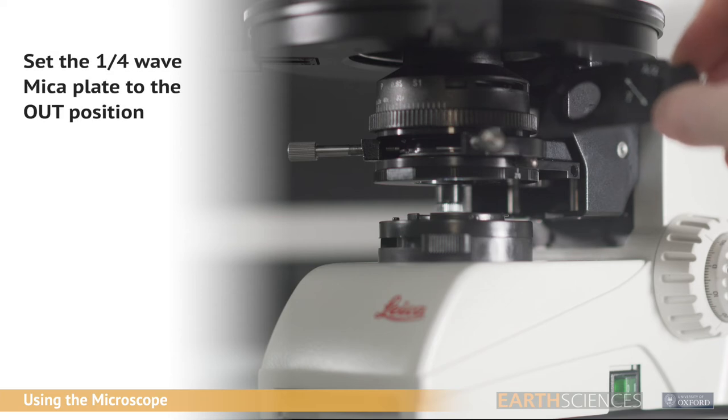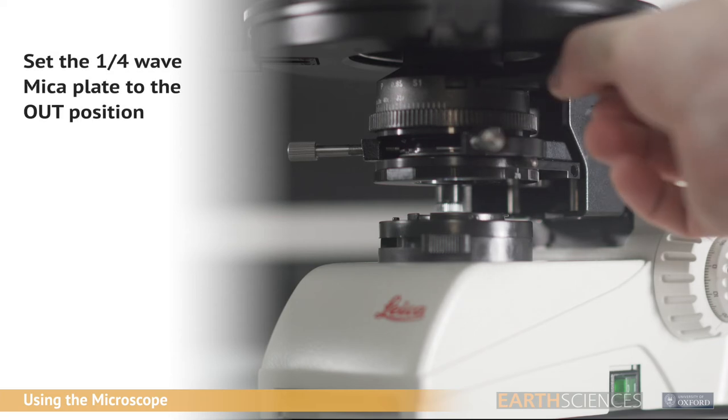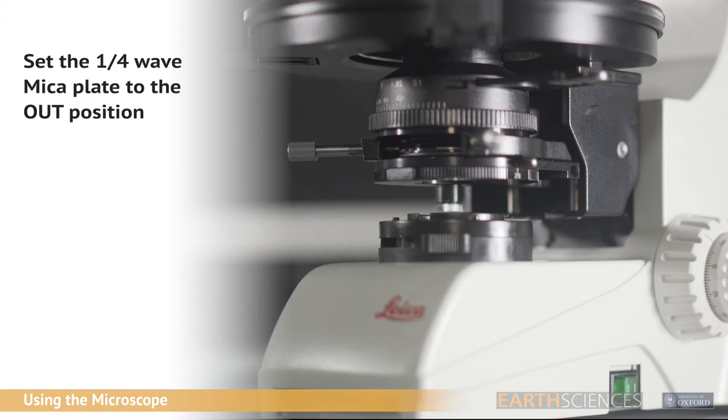Also on the right hand side, directly under the stage, is a slot which accepts the quarter wave mica plate. Ensure that this is in the out position.